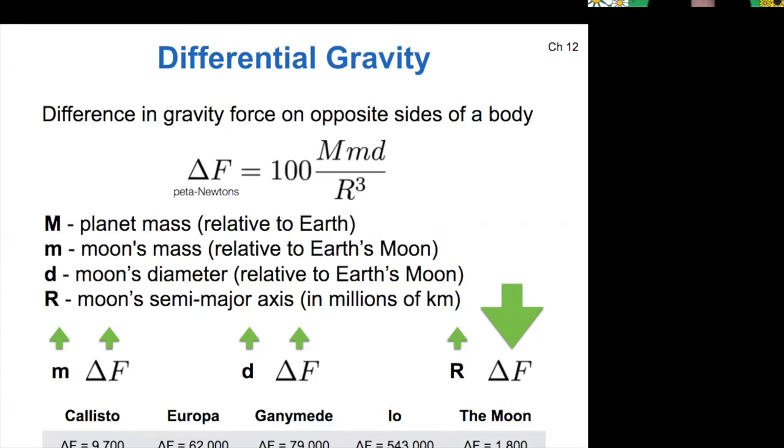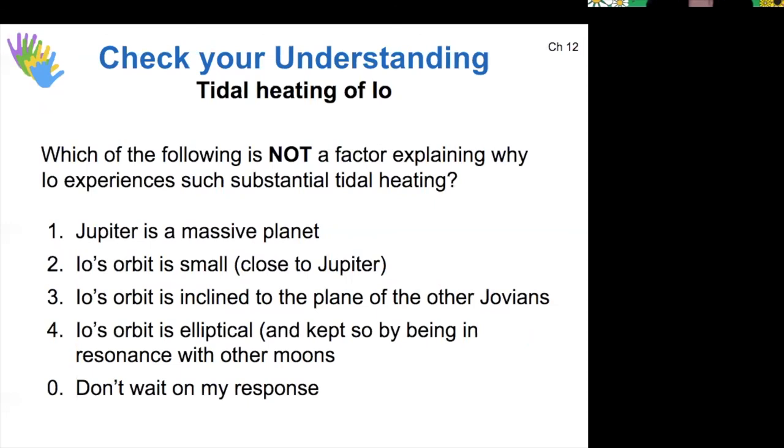All right. So to check on this whole discussion of tidal heating, which one of these is not a factor that explains why Io experiences tidal heating? Okay. Yeah. Lots of productive ideas here. So maybe also you're interpreting three is one thing, but I think I meant a different thing. Io's orbit is equatorial with respect to Jupiter. So its orbit is not inclined with respect to any of the other, I think I should have just said Galilean moons, but you're also right. Other planets, Saturn would be far too far away for it to affect Io's orbit. So yes, three is not the best choice. So the question is, does the ellipticity of Io's orbit make any difference? And it does in fact, so the resonance with those other moons does have a small effect on the tidal heating.